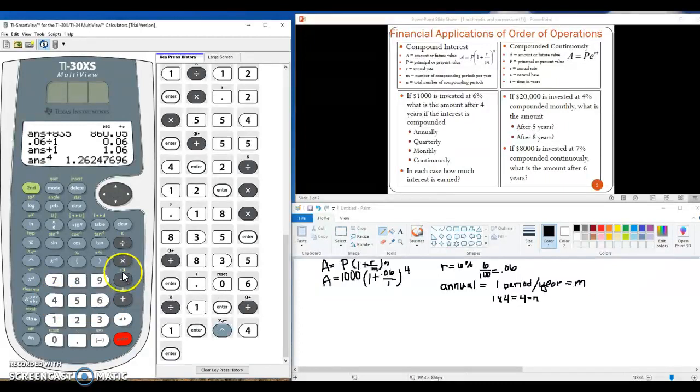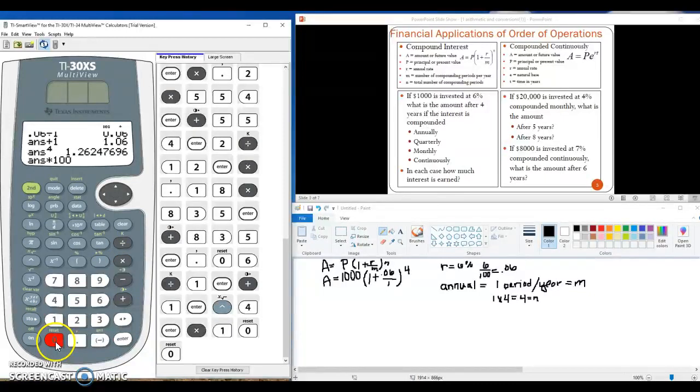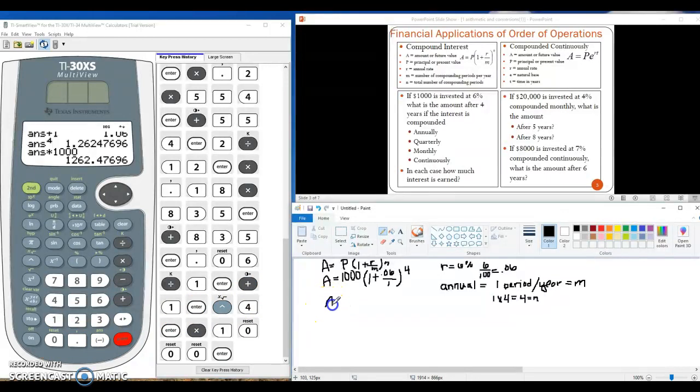And finally I'll do that multiplication. So times 1000 and I hit enter. So I find that if there is annually compounded interest, the amount will be $1262.48.